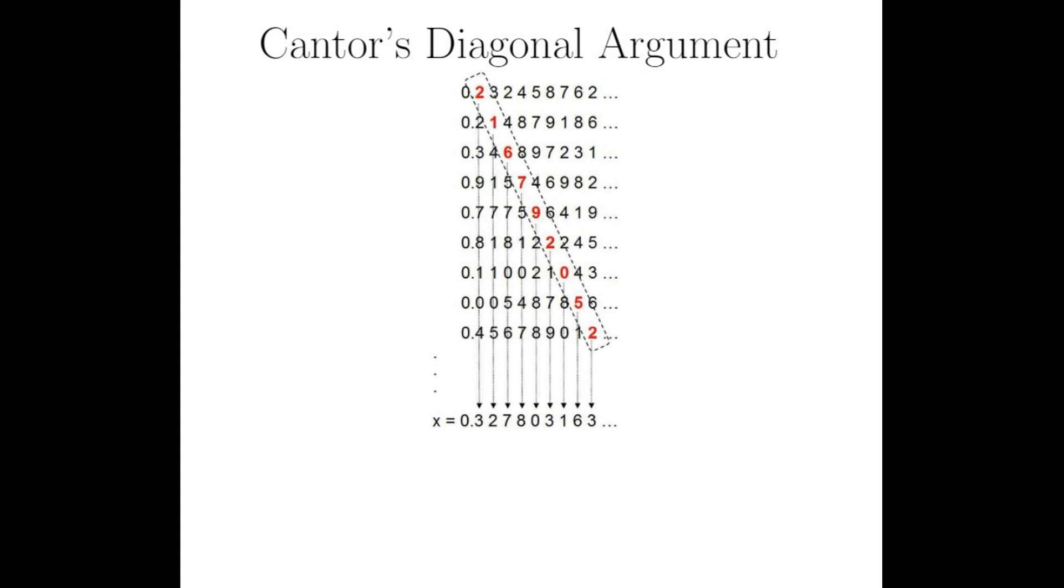Now I will construct a new real number like so. The first decimal place of my new number will be one more than the first decimal place of the first number on my list. The second decimal place of my new number will be one more than the second decimal place of the second number on my infinite list. And so on, and so on.